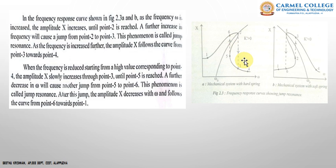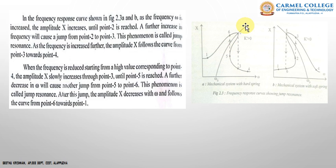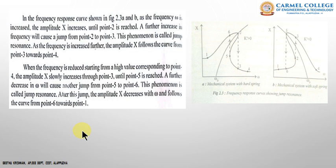When we decrease the frequency, the amplitude correspondingly increases from point 4 to point 5. When we further decrease the frequency, it jumps from point 5 to point 6. This property is again called jump resonance — the amplitude jumps from one point to another for decreasing values of ω. That property is called jump resonance or multi-valued response.